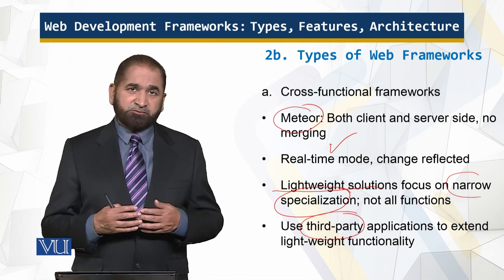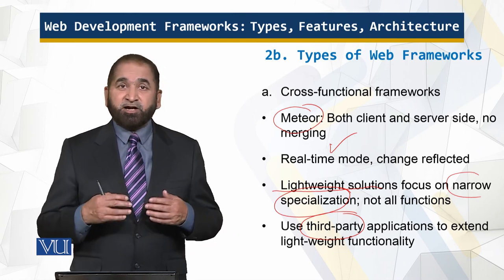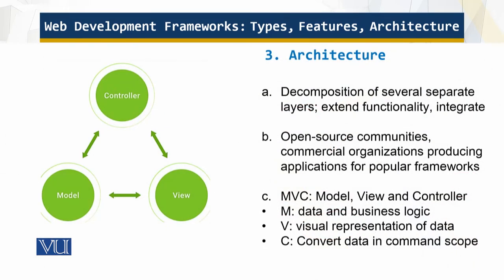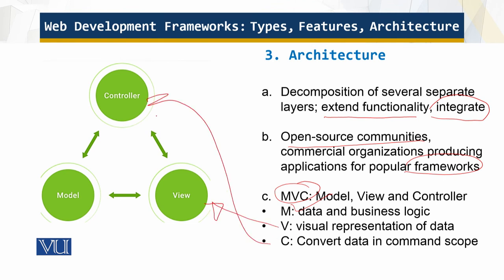To make lightweight frameworks more effective, you can extend them using third-party applications to add more functionality. The architecture decomposes into several layers which extend functionality and help integration. There are open-source communities and commercial organizations providing applications for popular frameworks. These frameworks follow the MVC model — with M for data and business logic.